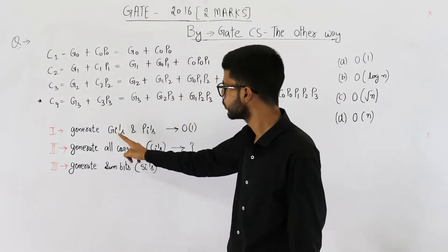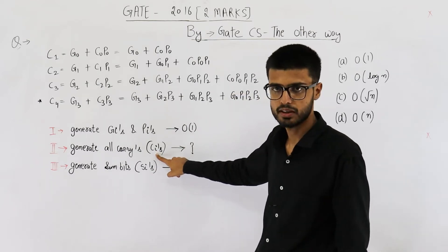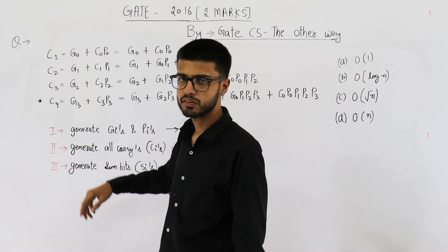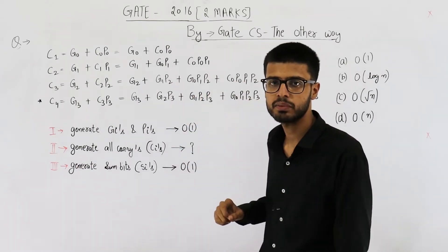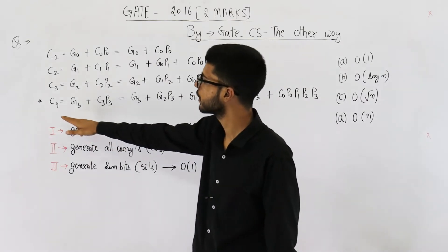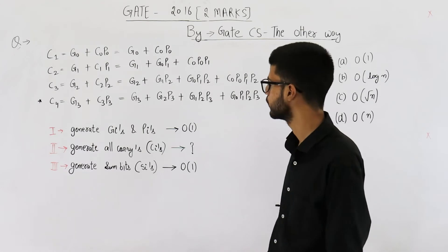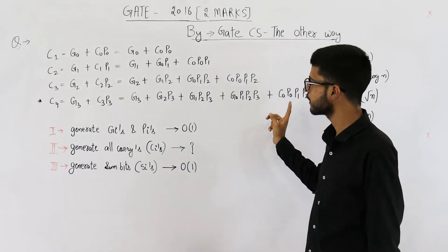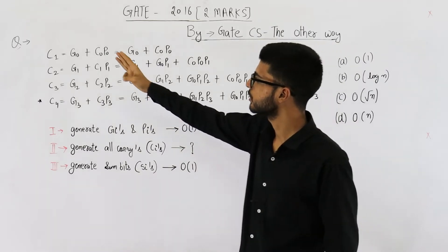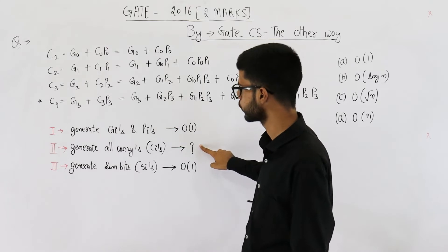The next step is to use the values of gi's and pi's to generate the actual carries. You can see the formulas for c1, c2, c3, c4 are written. Similarly, you can write c5, c6, c7, c8, and so on till cn. Using the values of g0 to gn and p0 to pn, we can generate all the carries from c1 to cn. That is step two.